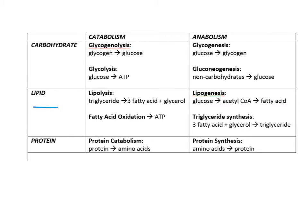Looking at lipid metabolism, lipolysis takes triglycerides and breaks them down into fatty acids and glycerol. These fatty acids can then be oxidized to produce ATP as an energy source, or they can be used in the anabolic synthesis of glucose via gluconeogenesis, which can again act as an energy source.